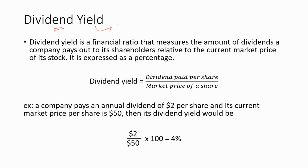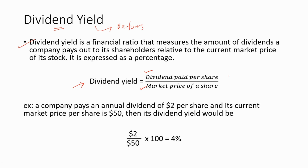Now let's discuss how we can calculate returns to shareholders. Dividend yield — the term 'yield' is used in finance for returns, so dividend yield means dividend returns. Dividend yield is a financial ratio that measures the amount of dividends a company pays out to its shareholders relative to the current market price of its stock, expressed as a percentage. The formula is: dividend paid per share divided by market price of a share. An important thing to note when using this formula is that the numerator and denominator must have the same unit.